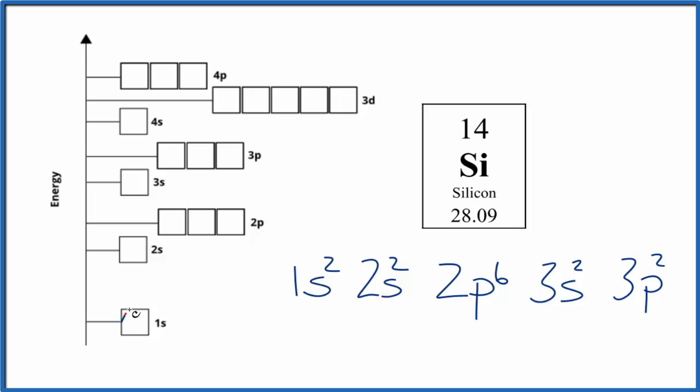We have 1s2, so we put 1 here, and then in the opposite direction. 2s2, 2p6, first we spread them out, and then we pair them up.